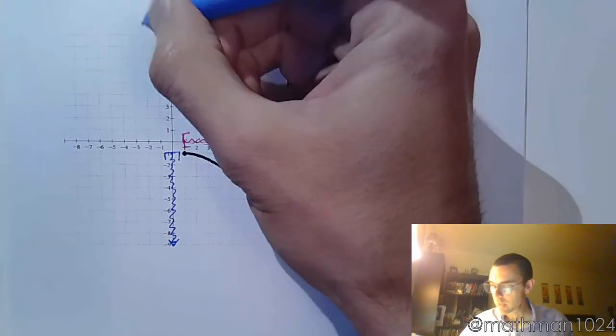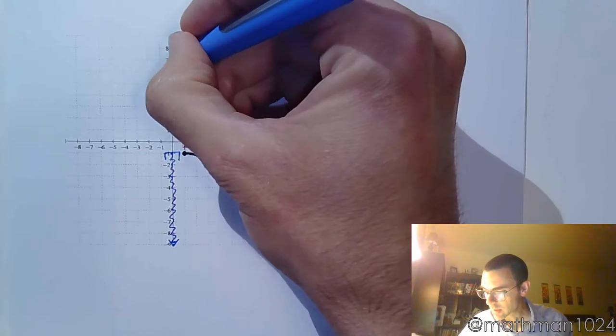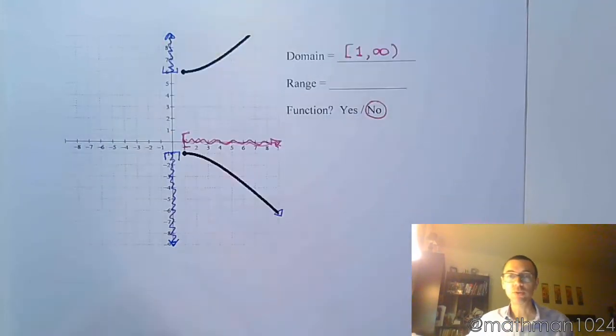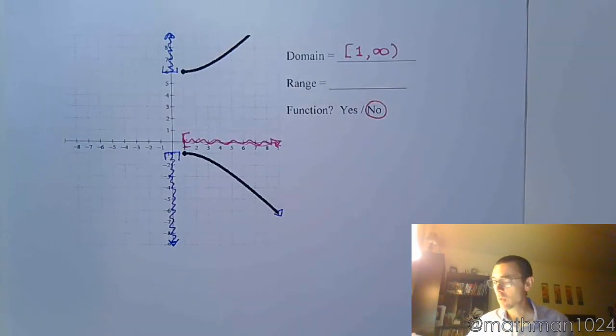So he jumps back up to be here at 6. And he goes to infinity. Alright?